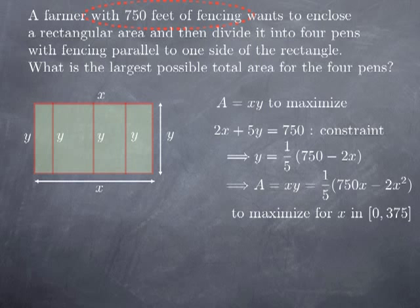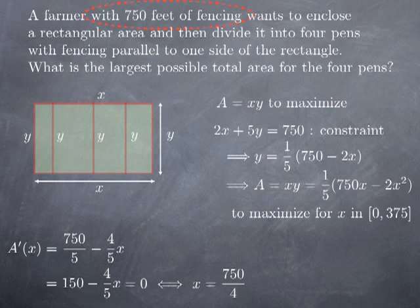Why [0, 375]? x must be at least 0 because it's a dimension of the rectangle. It cannot be more than 375 because going 375 in the x direction and coming back another 375 already uses all 750 feet of fencing without going in the y direction. Using the closed interval method, I differentiate A to get 750/5 minus (4/5)x, which equals 150 minus (4/5)x. This is 0 exactly when x is 375/2.